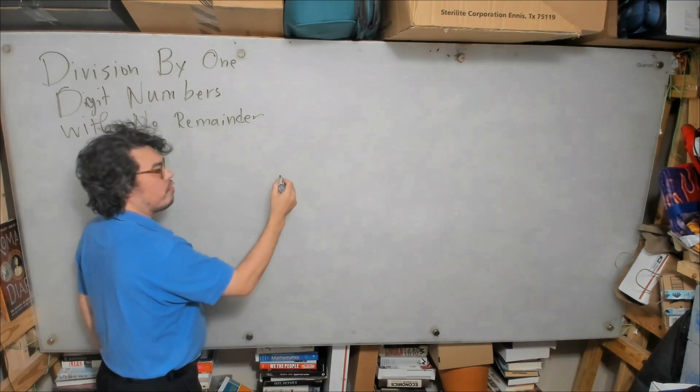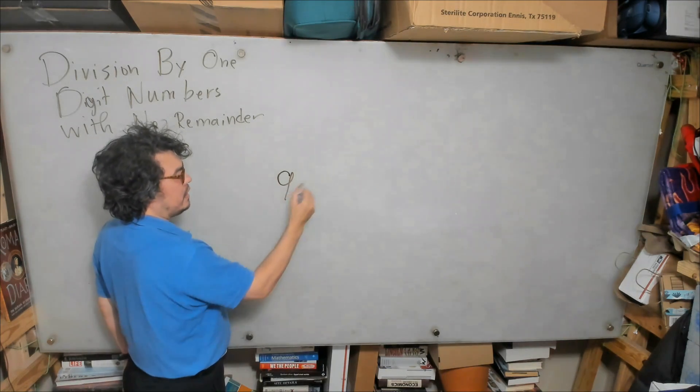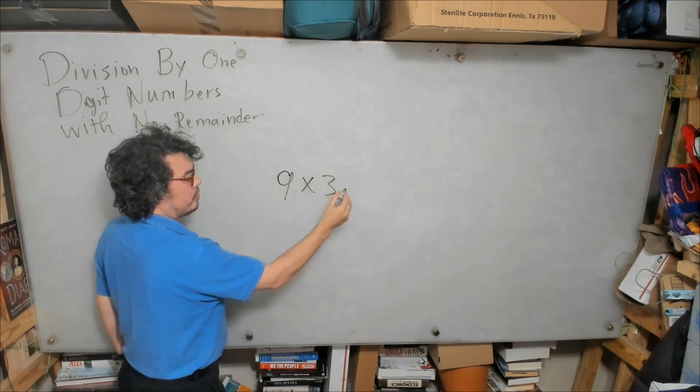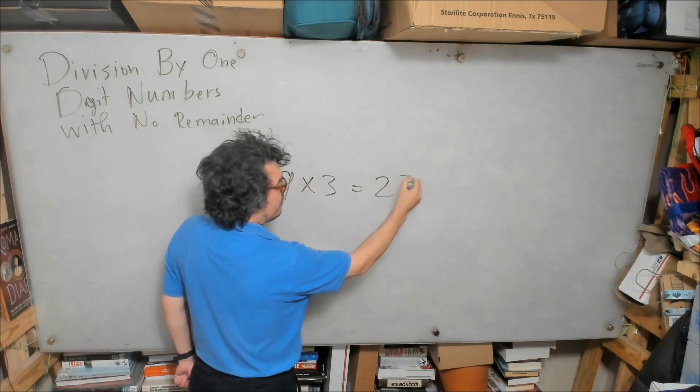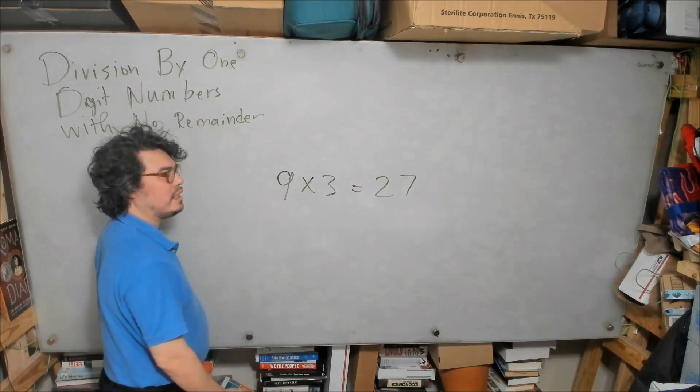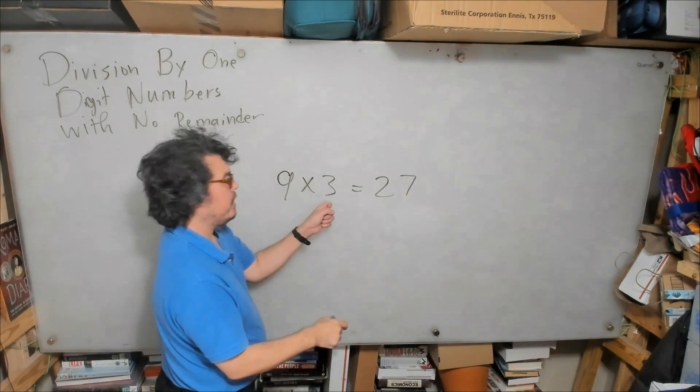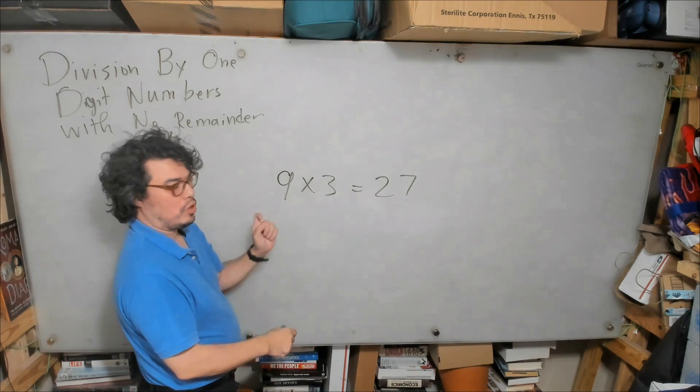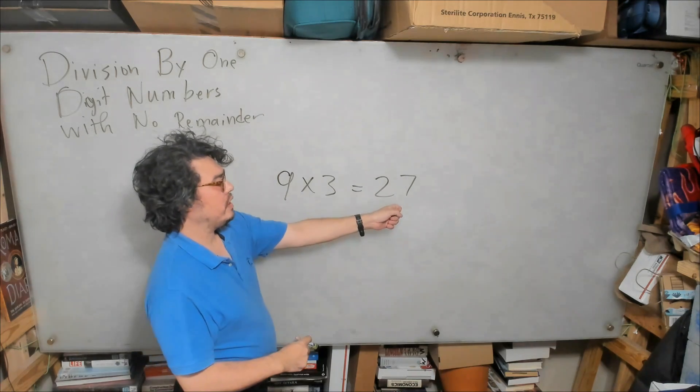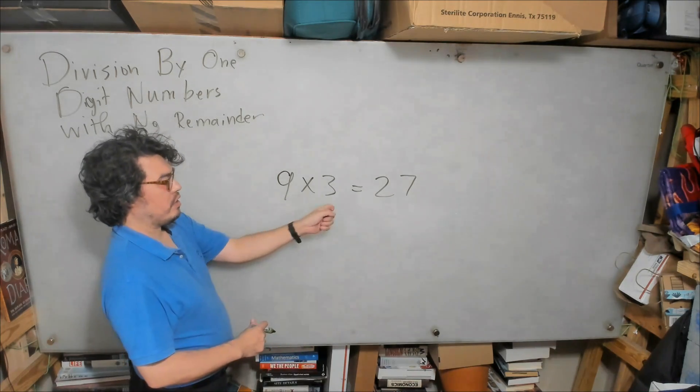We know, for example, that if I take 9 times 3, I get 27. And what this tells us is that if I divide 27 by 3, I'll get 9. Or alternatively, if I were to divide 27 by 9, I would get 3.